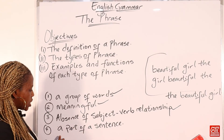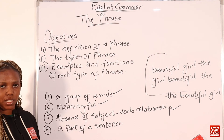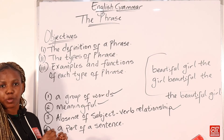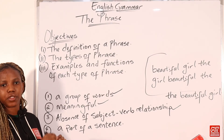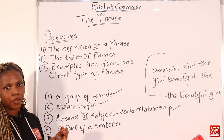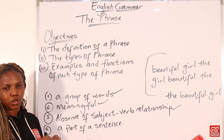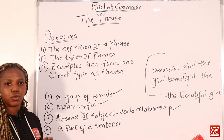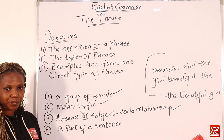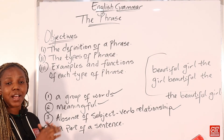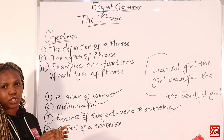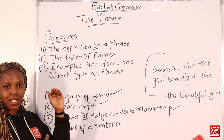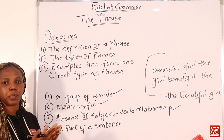Now let's look at the last element: a part of a sentence. A phrase forms part of a sentence. The phrase occupies the third position on the ranking scale of the grammatical hierarchy in ascending order. If this is unfamiliar, please click the link in the description to check previous videos and understand the grammatical hierarchy. The sentence is the fifth position — the highest on the ranking scale — so the phrase, at the third position, forms part of a sentence.